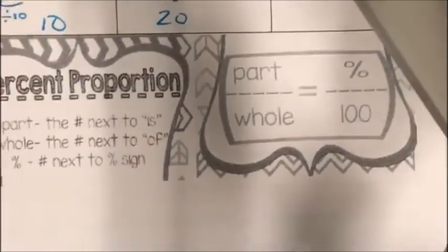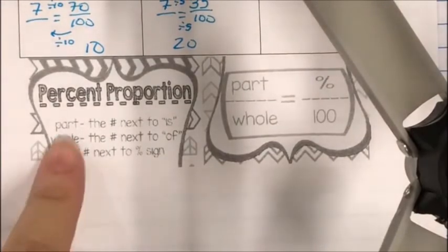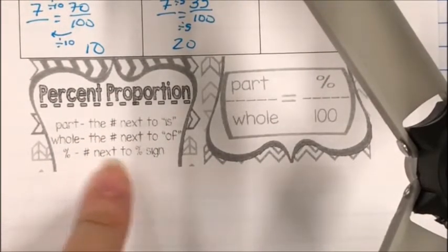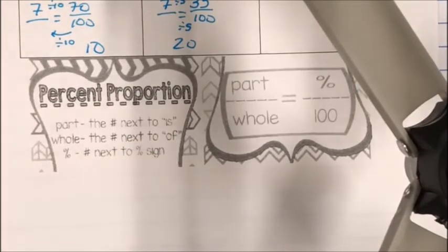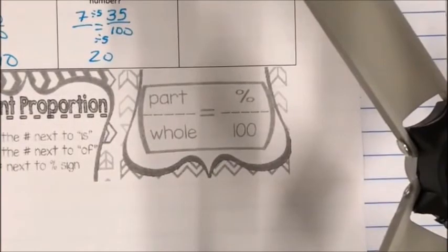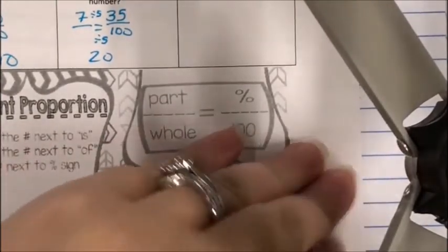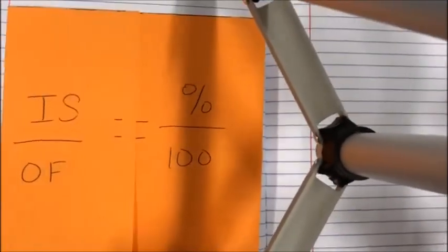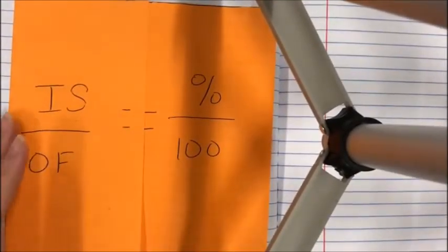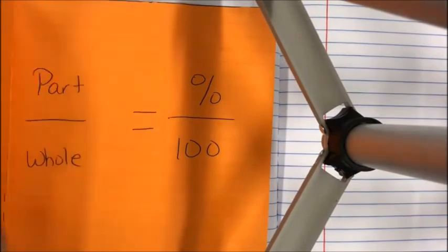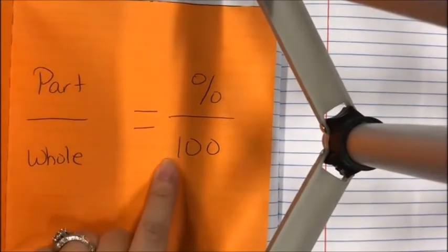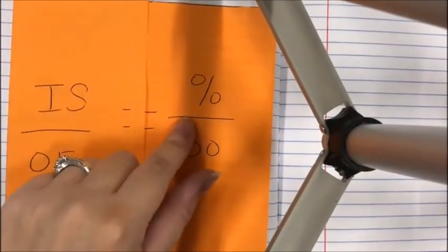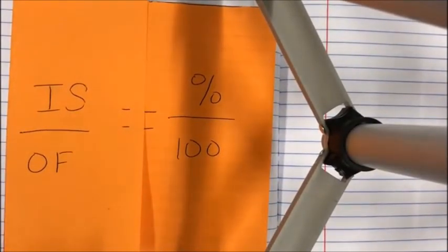At the bottom of the page there's a helpful infograph: the part is the number next to 'is,' the whole is the number next to 'of,' and the percent is the number next to the percent sign. Set it up as: part over whole equals percent over 100. On page 42 there's an orange foldable to help remember that 'is' is your part, 'of' is your whole, and it always equals percent over 100. That's the end of Chapter 2, Lesson 8 — and the end of Chapter 2 entirely.